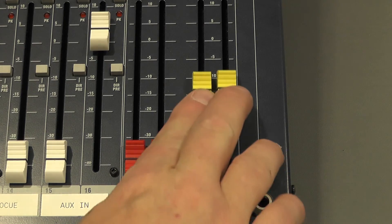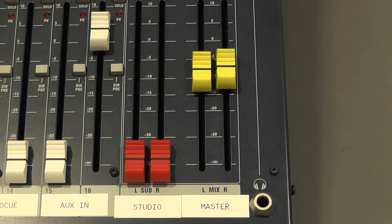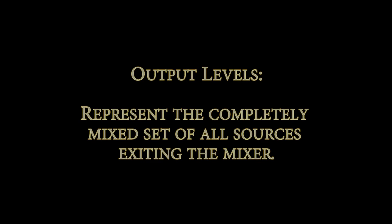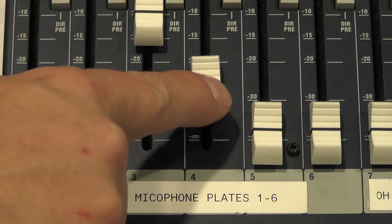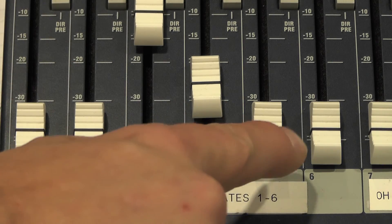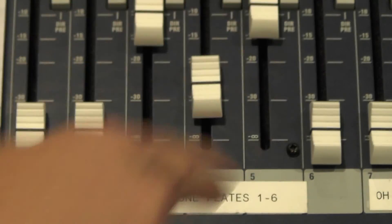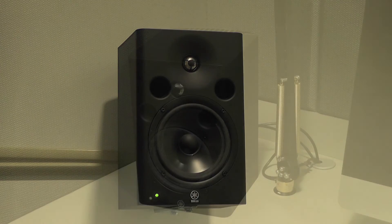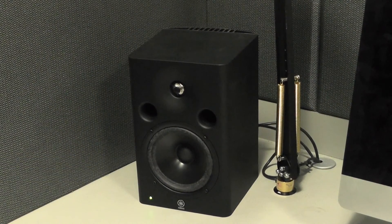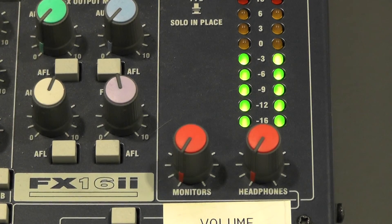Once you have set your input levels you need to check your output levels. The output levels represent the completely mixed set of all sources that are being sent out of the mixer. If your output levels are set correctly but you can't hear certain sources, you will need to adjust the input levels of the mixer. The monitor is the part of the mixer that allows us to hear our mix. Think of the monitors as the speakers on your stereo. Monitors don't affect the output of the program — they only allow you to listen to it.